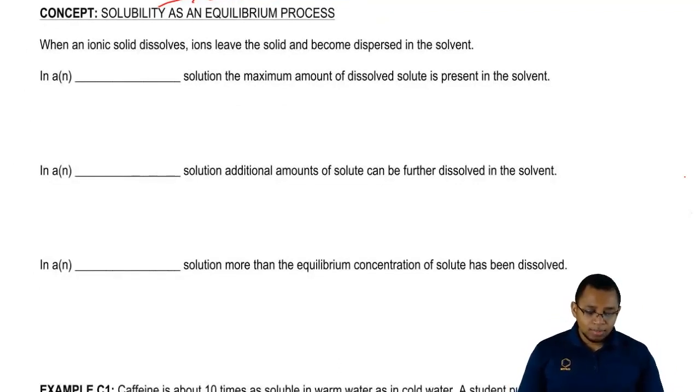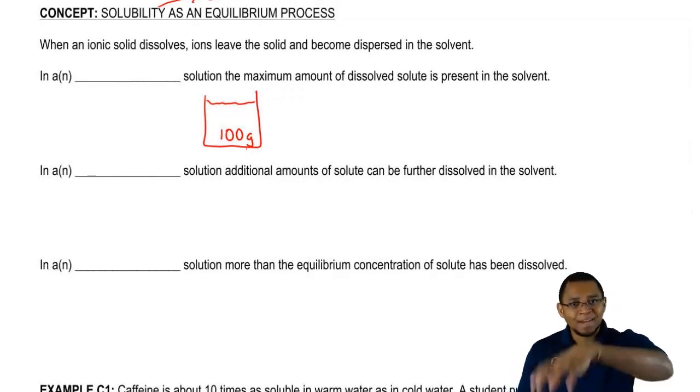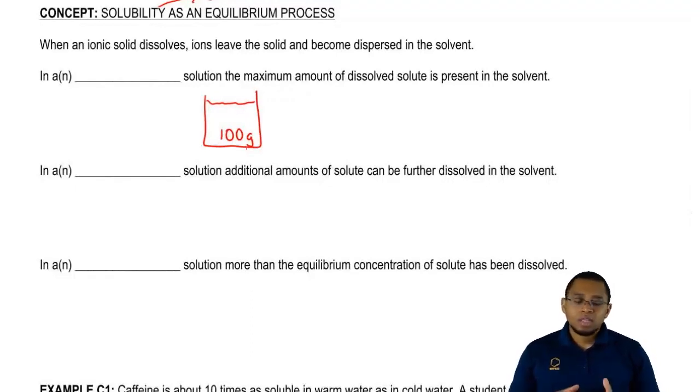In a saturated solution, the maximum amount of dissolved solute is present in the solvent. Let's say we have a bucket of water that can only dissolve up to 100 grams of solute. If I take 102 grams of solute and dump it into that bucket, the bucket will dissolve the 100 grams, no problem. But those extra 2 grams are not going to dissolve. They're going to remain as solids clumped up at the bottom. This solution has reached its maximum amount of solute, so we say it is saturated.